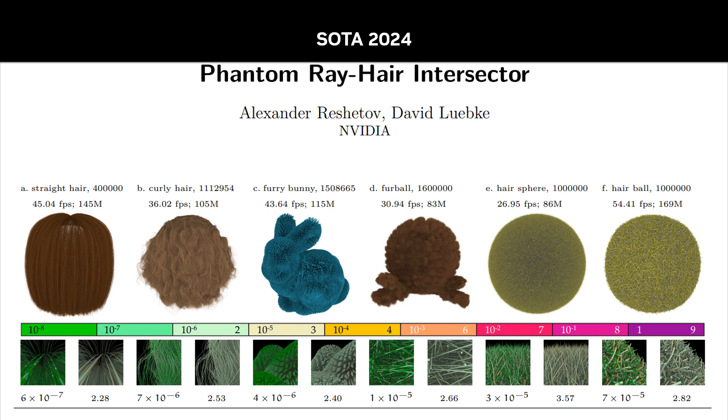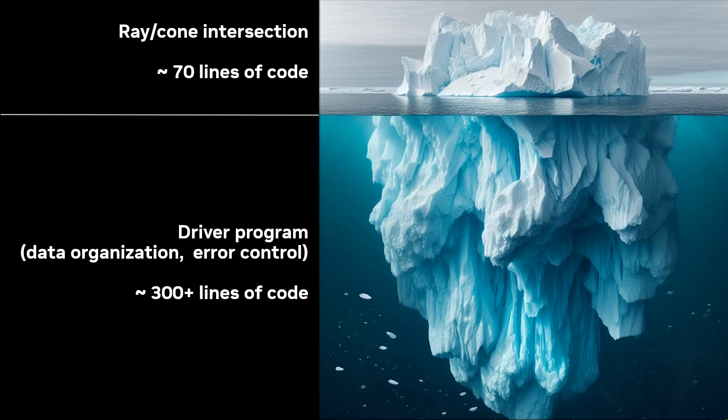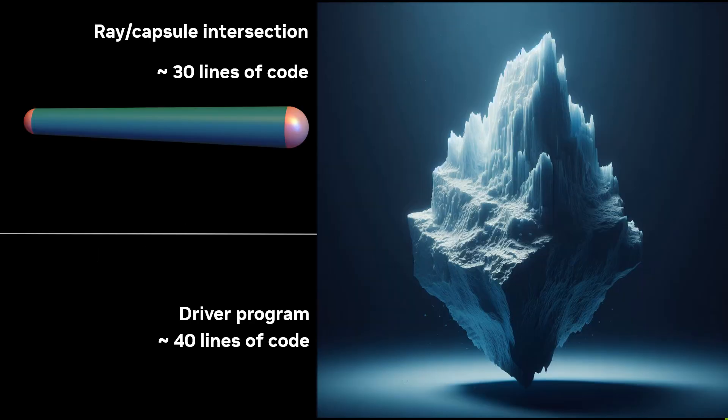The current state-of-the-art in hair ray tracing is represented by the so-called Phantom algorithm developed by NVIDIA. The Phantom algorithm is built on a rather simple modified ray-cone intersector, but Phantom as a whole is quite complex in order to allow for flexible memory performance trade-offs. On the other hand, the ROCAPS algorithm has minimal hidden components, and as an added bonus, it's more than twice as fast as Phantom.